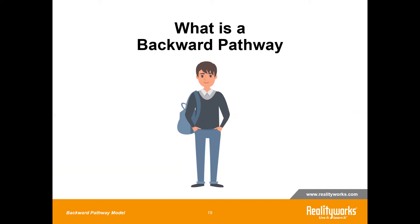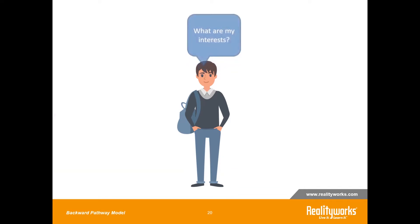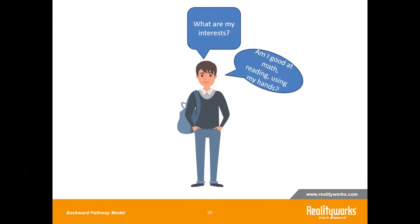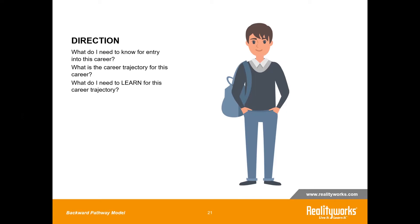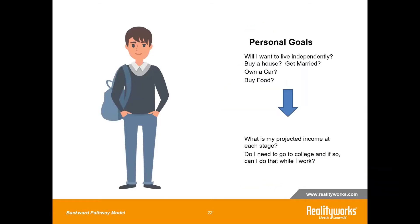So what is a backward pathway model, and how is the student involved? The backward pathway model first looks at the student and their personal interests, then compares those interests with the student's aptitude — can they be successful in this? This assessment allows the student to know if they can actually do this career. It gives the student direction: What do I need to know for entry? What's the career trajectory? What do I need to learn? And what are my personal goals — will I want to live independently, buy a house, get married, own a car? What's my projected income at each stage? Do I need to go to college, and if I do, can I do that while I'm working?